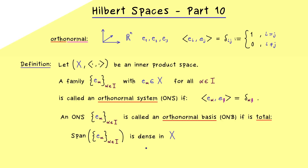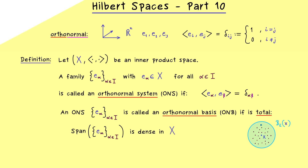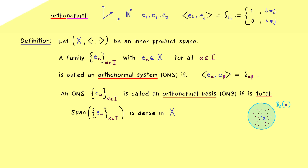Dense in X means that the closure of this subset with respect to the induced norm is equal to X. This means no matter which x you choose in our vector space X, you can always approximate it with a linear combination. In other words, if you put an epsilon ball around x, you always find infinitely many elements from this span. Hence we can choose epsilon as small as we want and always find a very good approximation for x in our span. This is the term total, which is only helpful in an infinite dimensional vector space.